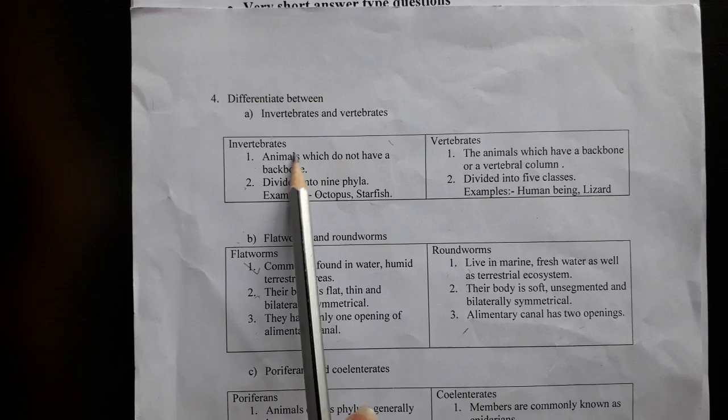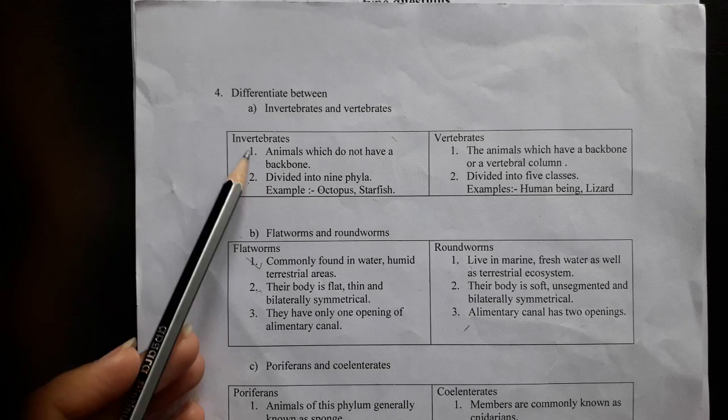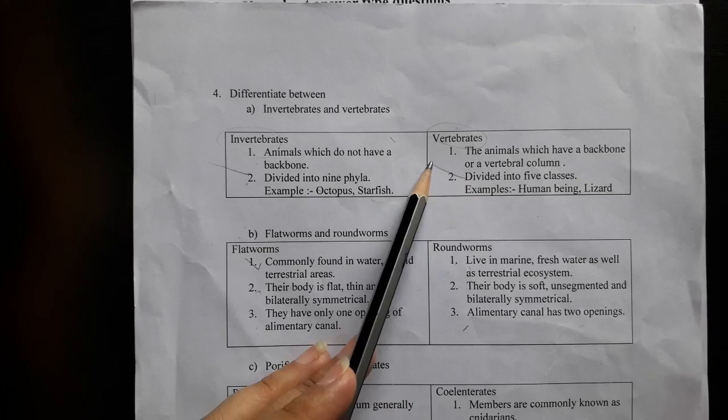Difference between invertebrates and vertebrates: invertebrates are animals that do not have a backbone; vertebrates are animals that have a backbone. Invertebrates are divided into nine phyla; vertebrates are divided into five classes. Examples of invertebrates: octopus, starfish. Examples of vertebrates: human beings, lizard.